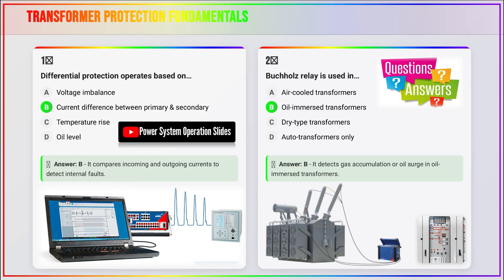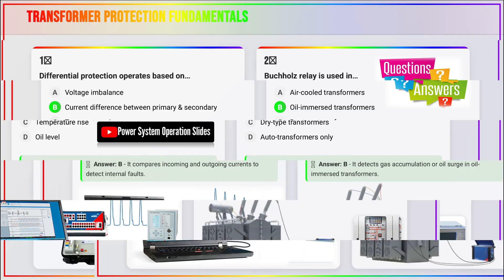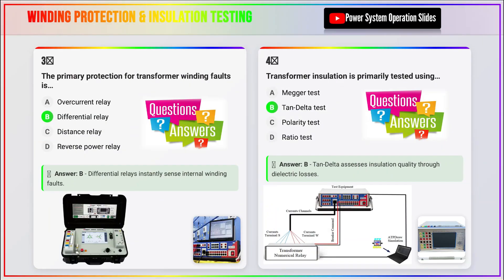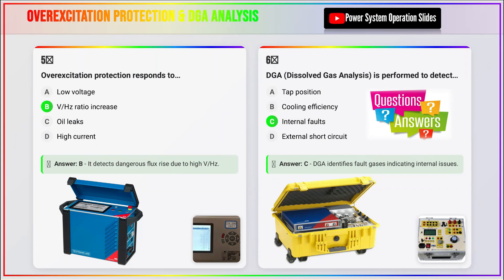Test 7: Oil Breakdown Voltage (BDV) Test. The oil breakdown voltage (BDV) test measures the dielectric strength of transformer oil, which is essential for proper insulation performance. The procedure involves pouring oil into a BDV chamber with electrodes set at a 2.5 mm gap. Voltage is increased at a rate of 2 kV/s until breakdown occurs, indicated by a spark. This process is repeated 5 to 6 times, and the average value is calculated. Good oil typically has a BDV value greater than 60 kV, while low BDV values indicate moisture contamination or oil degradation that requires filtration or replacement. Regular BDV testing helps maintain oil quality and prevents insulation failures due to contaminated oil.